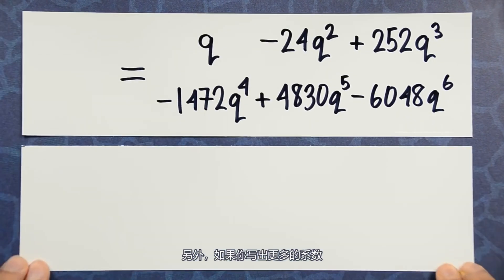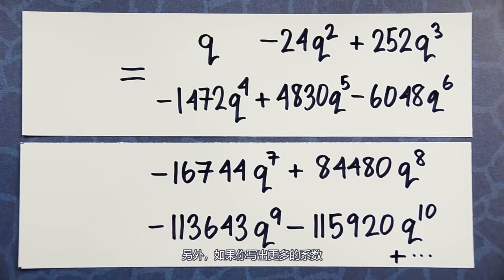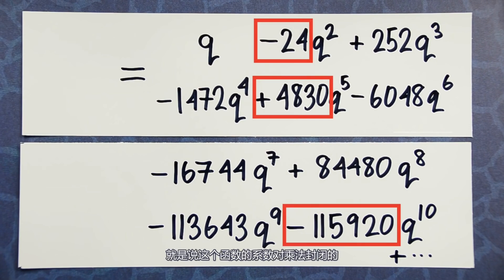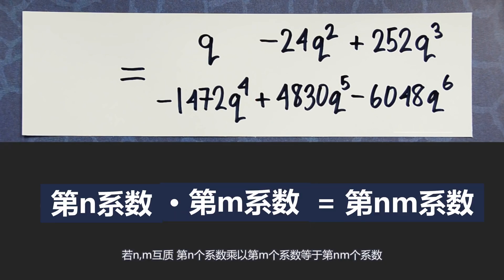Another observation: if you wrote out some more coefficients and took this number times this number, it equaled this number. In other words, the coefficients of this function were multiplicative — the n-th coefficient times the m-th coefficient equals the nm-th coefficient, whenever n and m were co-prime.